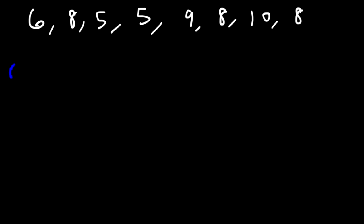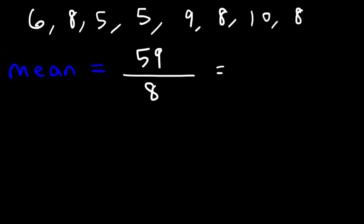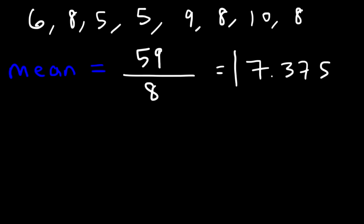So let's start with the mean. Let's add up the numbers. 6 plus 8 plus 5 plus 5 plus 9 plus 8 plus 10 plus 8 gives us a sum of 59. And there are 8 numbers. 59 divided by 8 is equal to 7.375, and so this is the average.